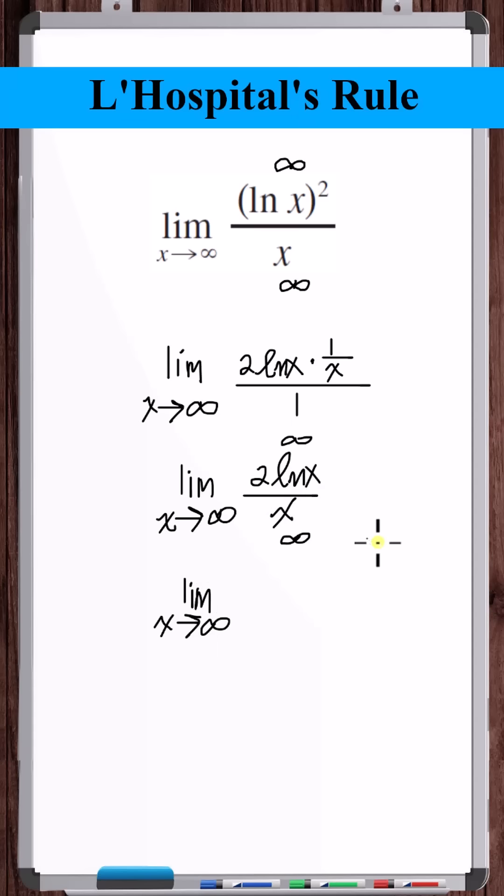Let's use L'Hôpital's rule again. The derivative of the numerator is 2 over x. The derivative of the denominator is 1.